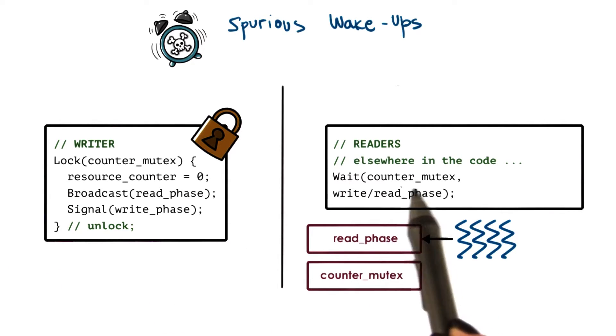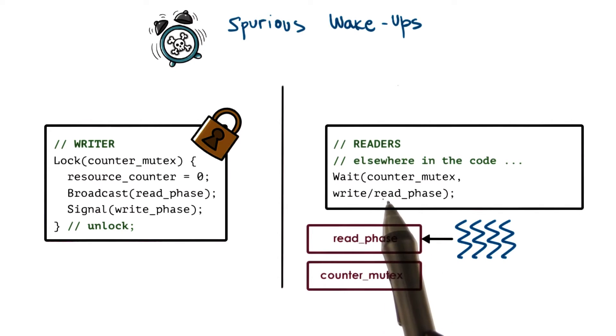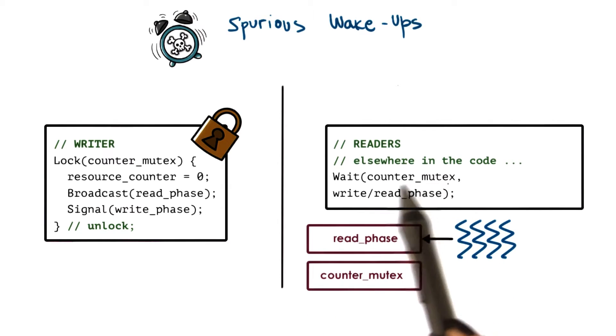the threads that are waking up from this queue that's associated with the condition variable that's part of the wait statement, they have to, the very first thing they do is they have to reacquire the mutex.